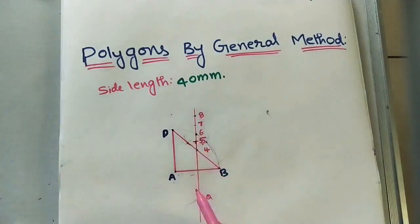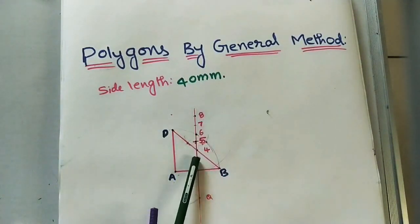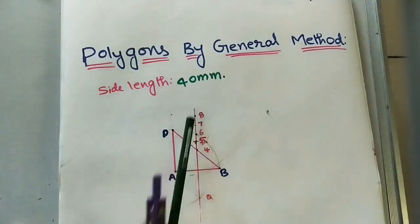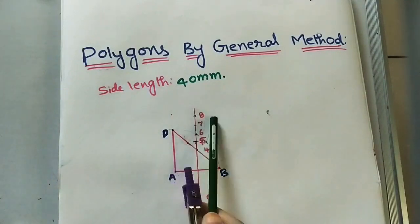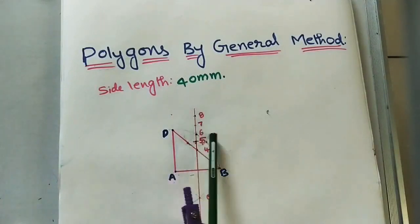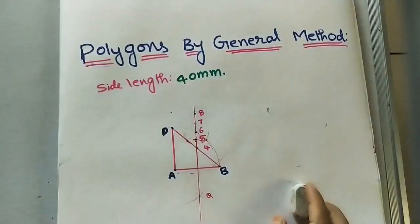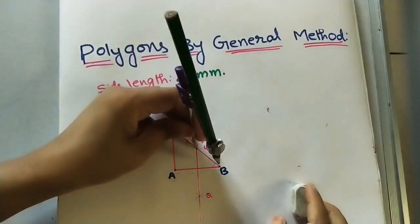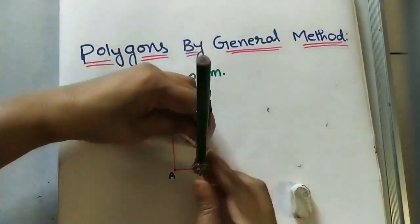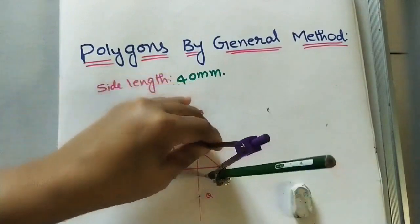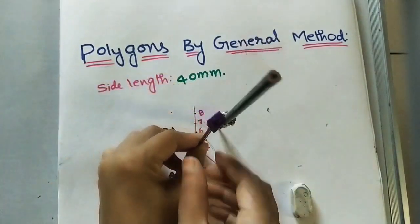These points are the centers for building polygons. For building a square, take four as center; for a pentagon, take five as center; for a hexagon, take six as center — the number corresponds to the number of sides. Take four as center and four-A as radius and build one circle.